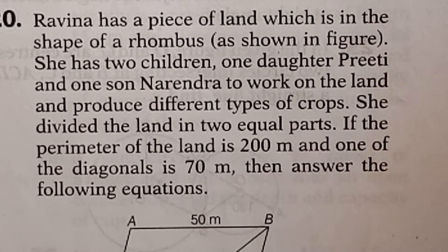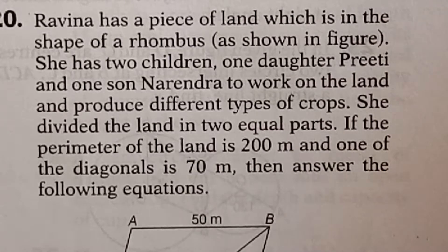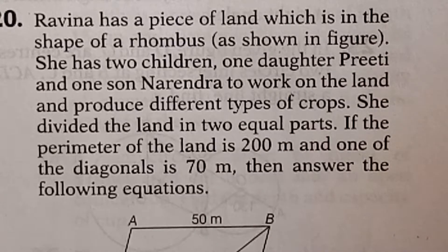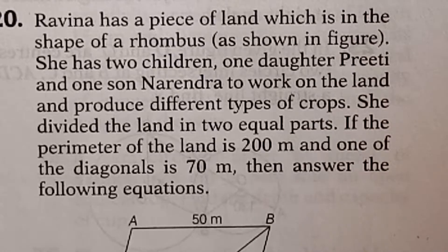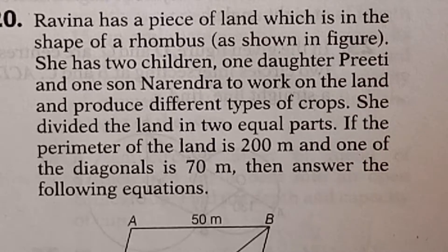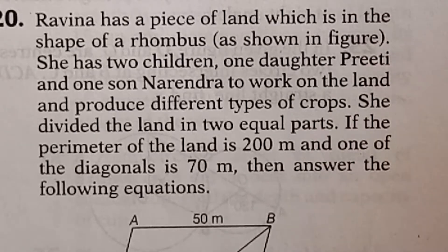Students, this is a case study question from chapter Triangle. It is given here that Raveena has a piece of land which is in the shape of a rhombus. She has two children — one daughter Preeti and one son Narendra — to work on the land and produce different types of crops. She divided the land into two equal parts. If the perimeter of the land is 200 meters and one of the diagonals is 70 meters, then answer the following questions. Since the perimeter is 200 and it is a rhombus...